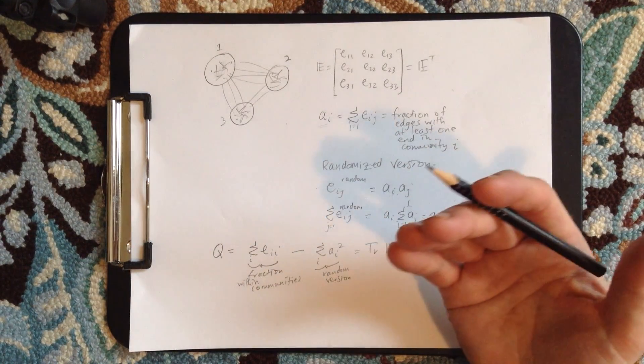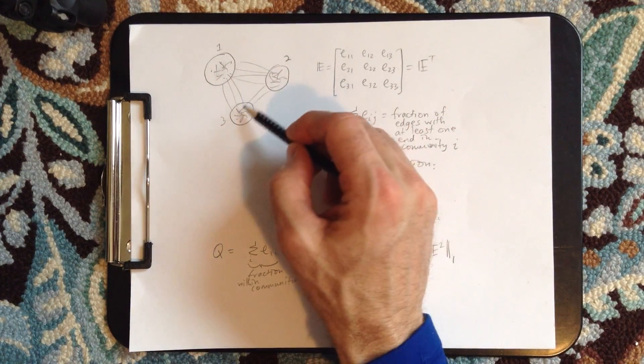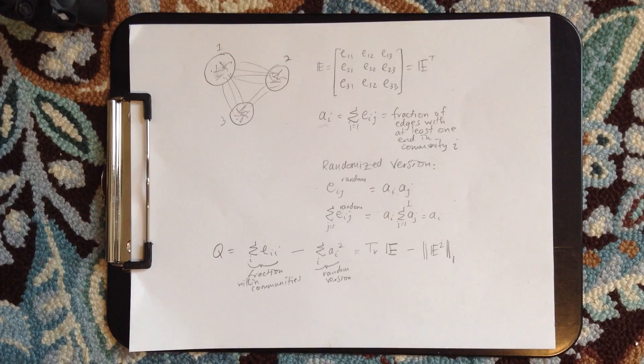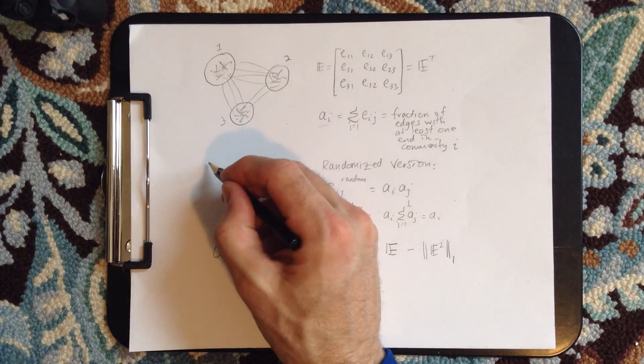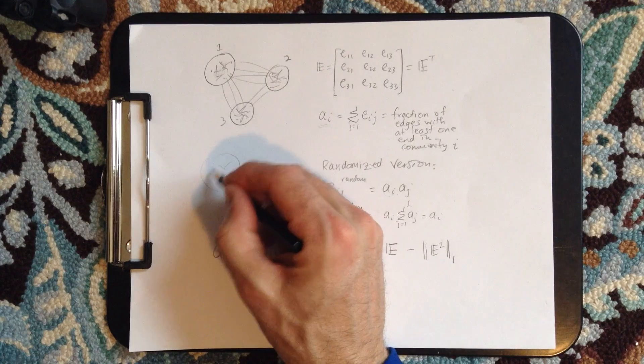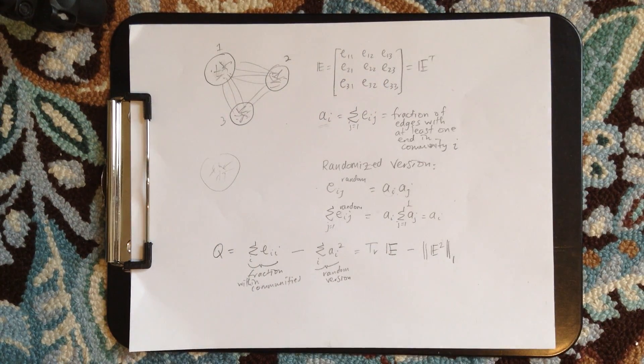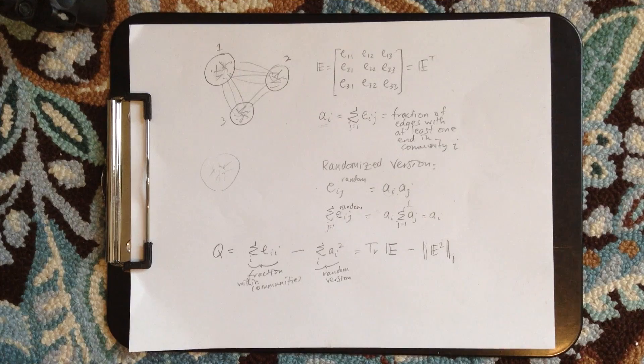So one thing we can then say is, well, what's the fraction of edges that are totally, completely within communities? And that by itself is not enough. So we could just have one big network, or we could just put a big circle around the whole network, and then all of the edges are within the community. So that would get a one if we just measure that.